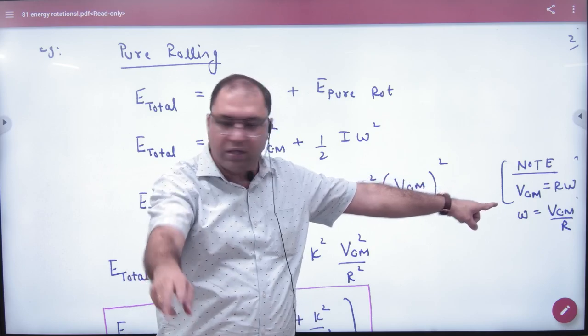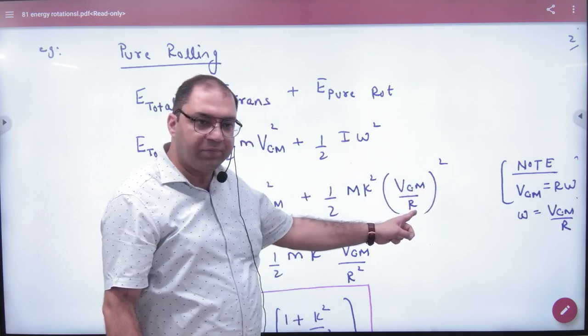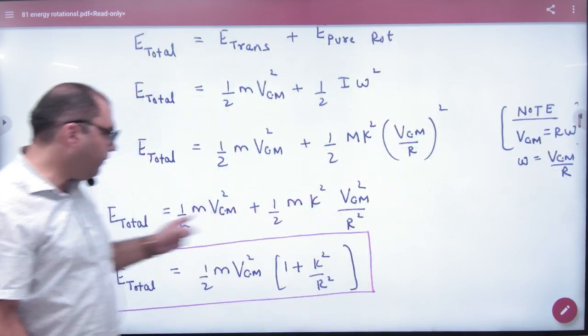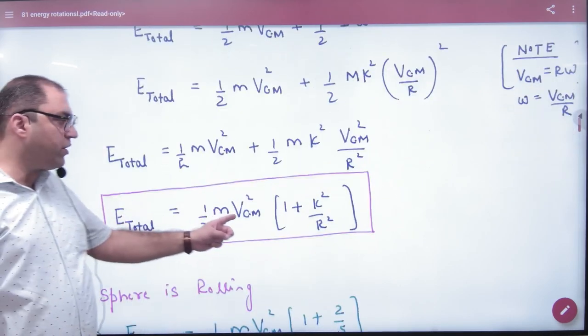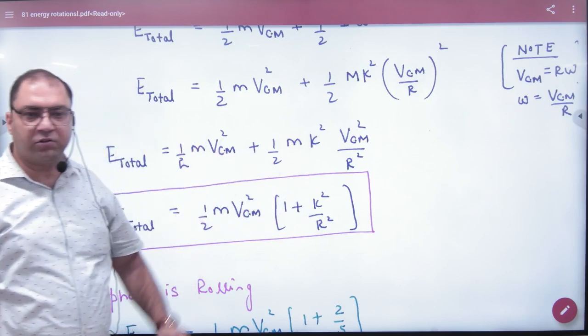Then omega becomes v by r, and it will be squared. Here, half m v squared is common, so it becomes 1 plus k squared by r squared.